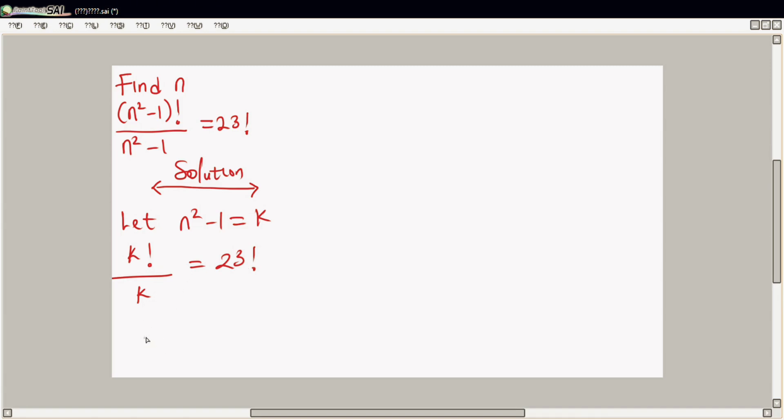From here you can use the formula for factorial: k in bracket of k minus one factorial. It is possible like that over k equal to 23 factorial.